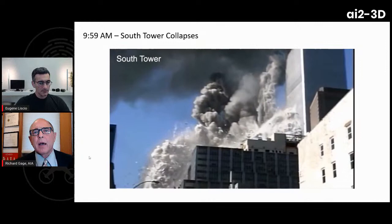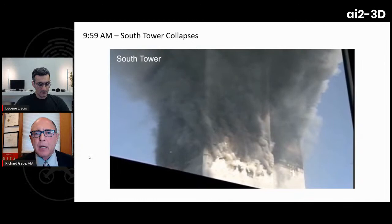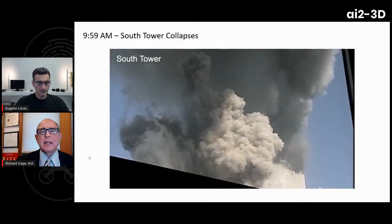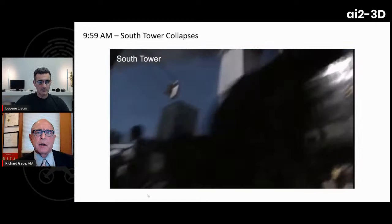Steel is not flammable under office fire conditions, so why are steel beams trailing thick white smoke clouds? Richard says this is evidence of aluminum oxide ash — a byproduct of thermite. There are also squibs: isolated explosive ejections laterally out of the towers, even 20, 40, and 60 stories below the collapse zone, visible in videos.